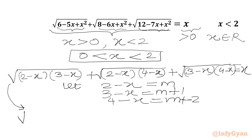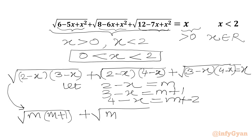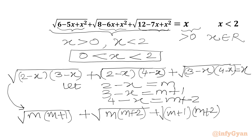Now we will write our equation in the variable m. So √(2 − x) = m, giving √(m(m+1)) for the first term, √(m(m+2)) for the second, and √((m+1)(m+2)) for the third. The RHS is x, and from our substitution x = 2 − m, so we put 2 − m on the right-hand side.